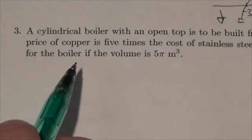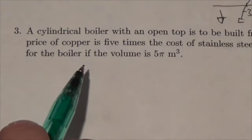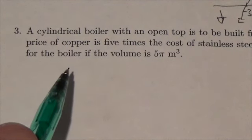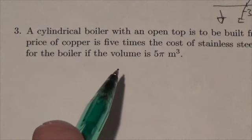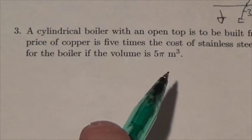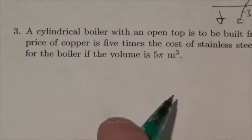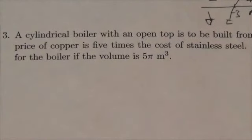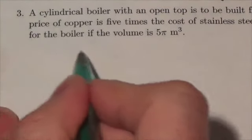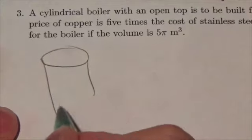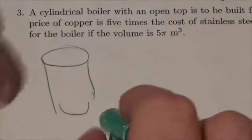It says a cylindrical boiler with an open top is to be built from stainless steel with a copper bottom. The price of copper is five times the cost of stainless steel. Determine the most economical dimensions for the boiler if the volume is 5π meters cubed. So we've got a cylindrical boiler with an open top here, basically what we've got here is this.